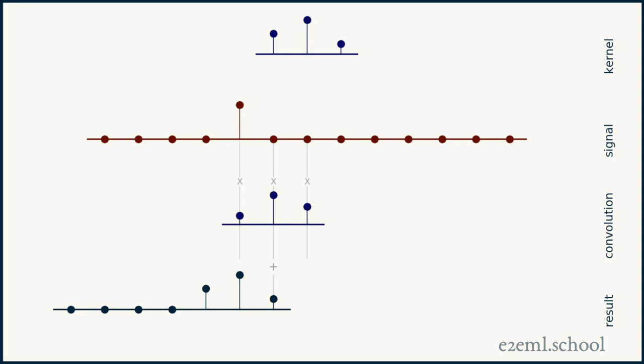We can see how this plays out. If we go point by point, it's only where both the signal and the kernel are not zero, that the result of the convolution is not zero.